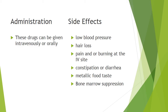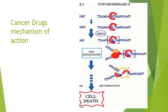VP16 was first synthesized in 1966 and FDA approval was granted in 1983. These drugs can be given intravenously or orally, and some have to be taken with more than one other cancer drug. Side effects include low blood pressure, hair loss, pain or burning at the IV site, constipation or diarrhea, metallic food taste, nausea, and vomiting. The cancer drugs interact with DNA by intercalation and inhibition of macromolecular biosynthesis, inhibiting the progression of the enzyme topoisomerase II, which relaxes supercoils in DNA for transcription. The drug stabilizes the topoisomerase II complex after it has broken the DNA chain for replication.